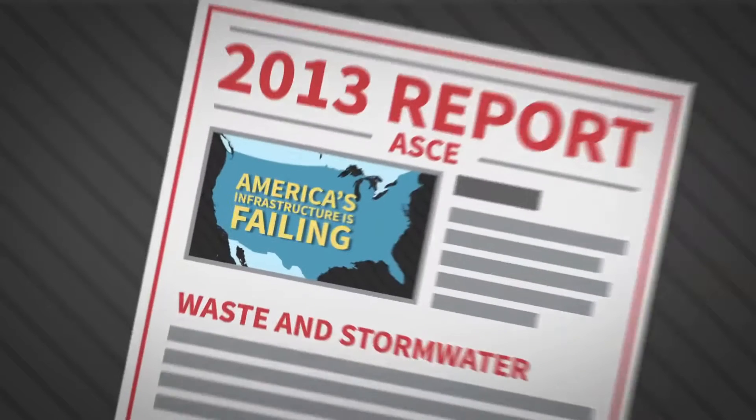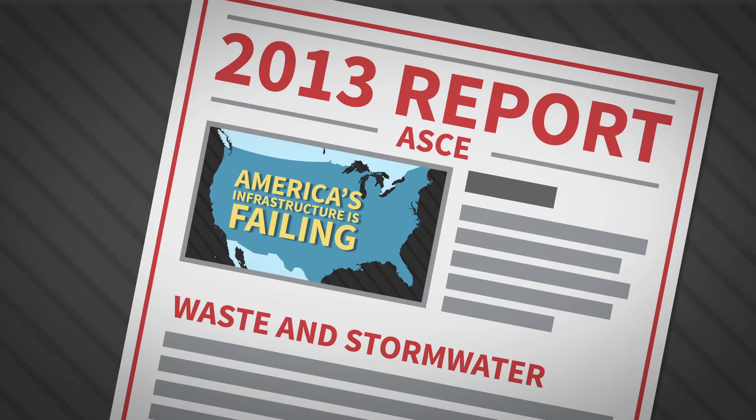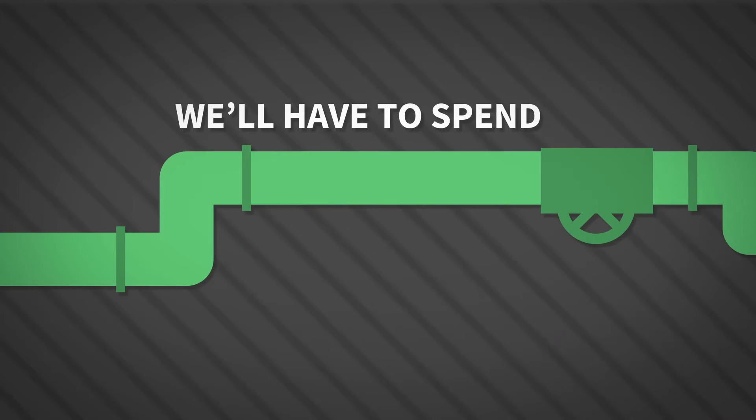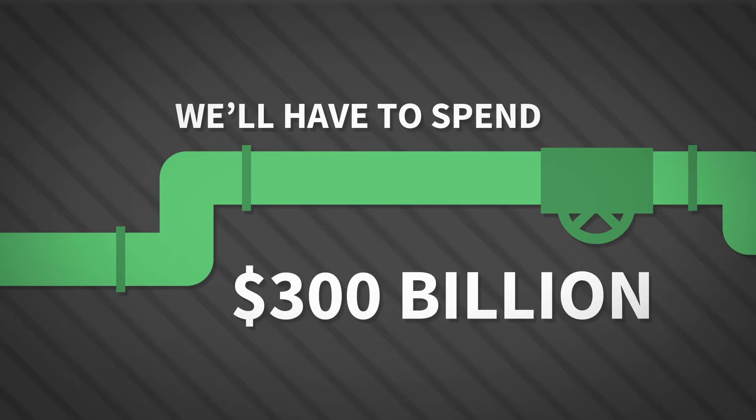America's infrastructure is failing. A 2013 report card from the ASCE graded our waste and stormwater as a D+. We'll have to spend almost $300 billion over the next 20 years to repair pipes and systems.